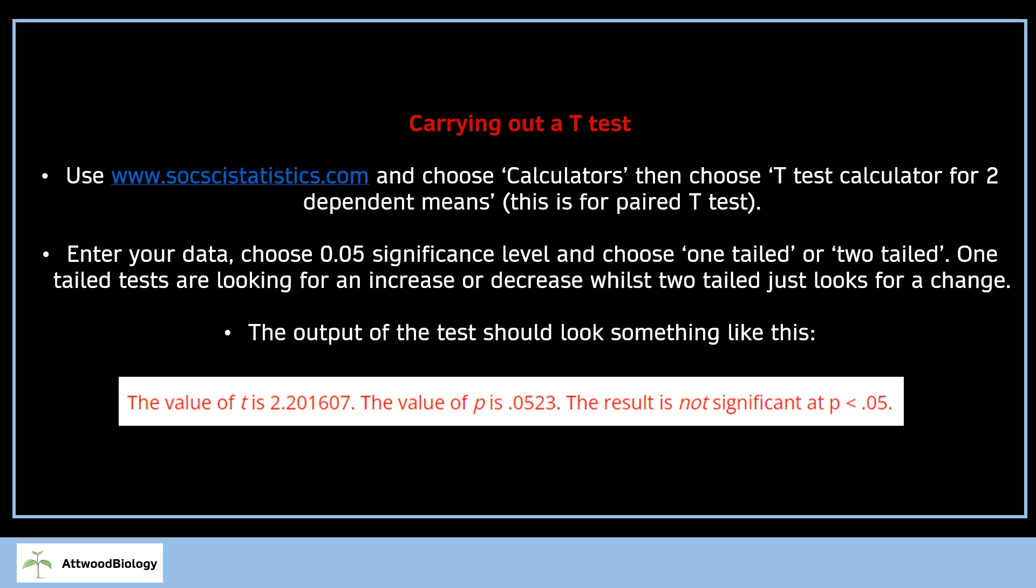In order to carry out the test, you're going to use the SoxizeStatistics.com website, choose calculators, and then choose T-Test calculator for two dependent means if you're using the paired T-Test. It's independent means if it's unpaired T-Test, so you need to work that out. Enter your data into the screen.